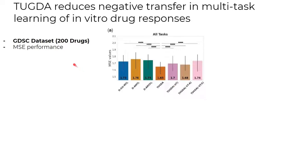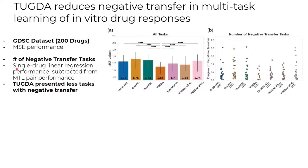To quantify the negative transfer behavior, we trained single-drug linear regression models. Then, the RMSE of the single-drug model is subtracted from the corresponding multitask learning version. With this, positive values indicate negative transfer. Here, TUGDA presented fewer tasks with negative transfer when compared to previous methods and also its ablated versions.